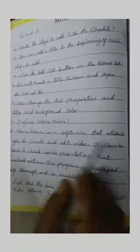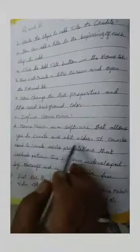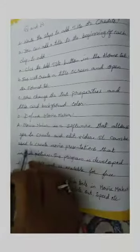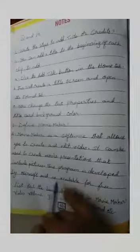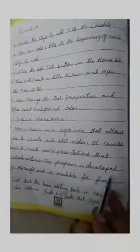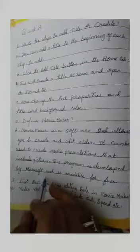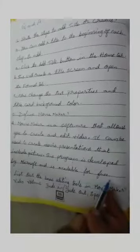Second one, define Movie Maker. Movie Maker is a software that allows you to create and edit videos. It can be used to create movie presentations that includes pictures. This program is developed by Microsoft and is available for free.